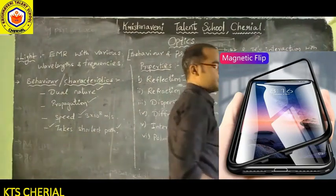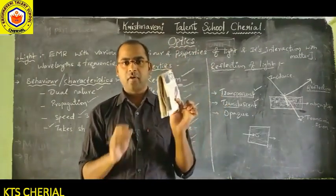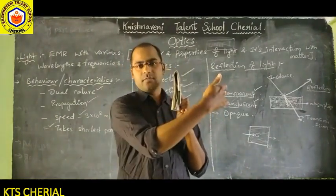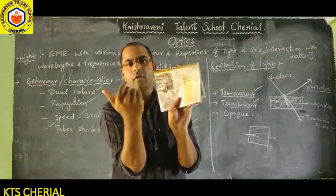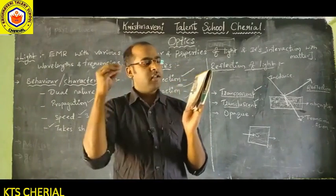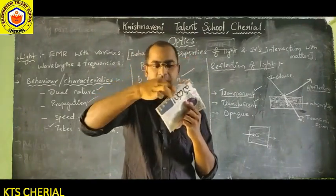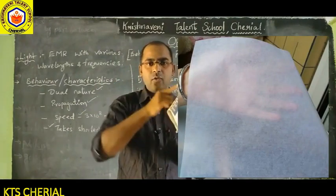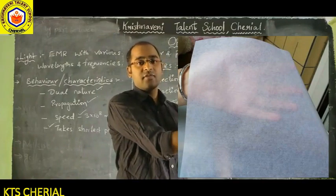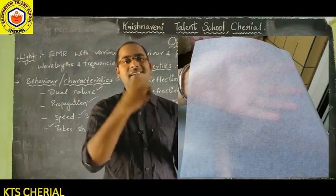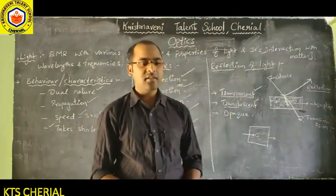A translucent object example is oil paper. Normal paper reflects light back, which is why you can read what's written on it. When coated with oil, light falls on it and follows different pathways inside the paper, reaching the other side in a scattered way. So objects behind oil paper appear fuzzy — oil paper is a translucent material.